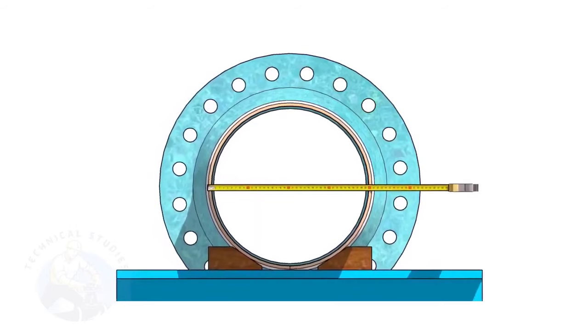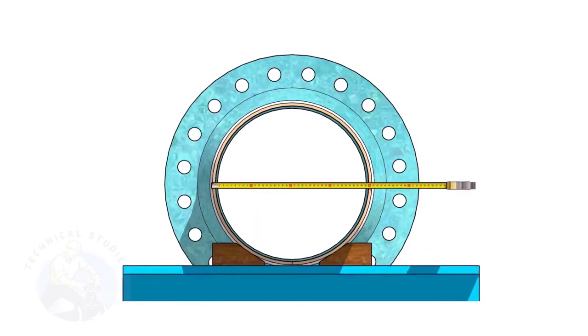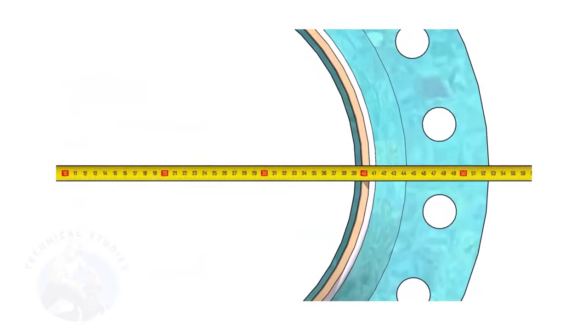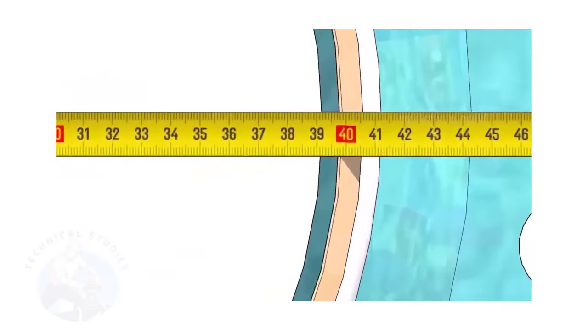Check the outer diameter of the pipe. Here, the diameter of the pipe is 406 millimeters.